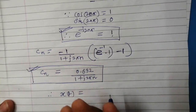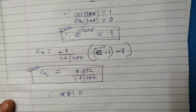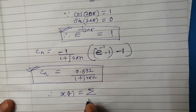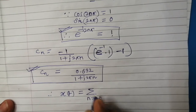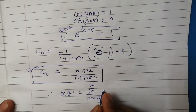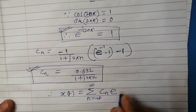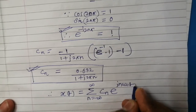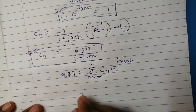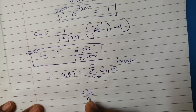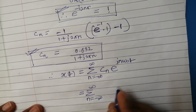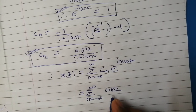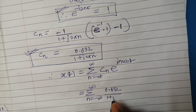Therefore, the exponential Fourier series x(t) can be expressed as the summation from n equals minus infinity to plus infinity of C_n times e raised to power j·n·ω₀·t. Placing the value of C_n, x(t) equals the summation of 0.632 divided by (1 + j·2πn) times e^(j·n·ω₀·t).